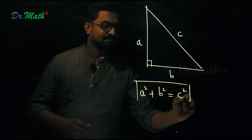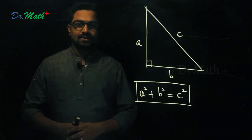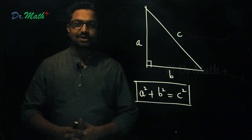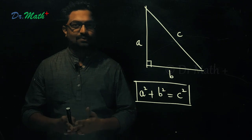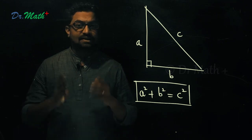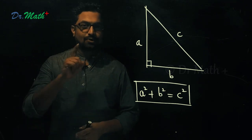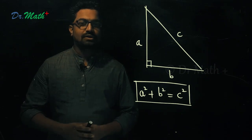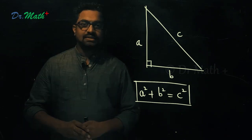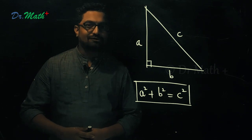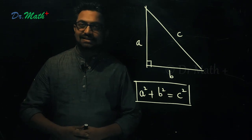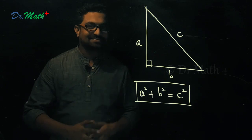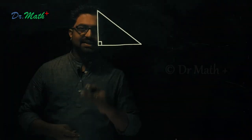But the question is: how can we prove this theorem — A square plus B square equals C square? There are several proofs available, but now I'm going to show you a proof which is based on similarity of triangles, as it might be useful for many students for their examination. So let's prove this theorem together.